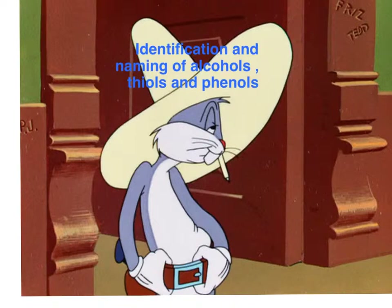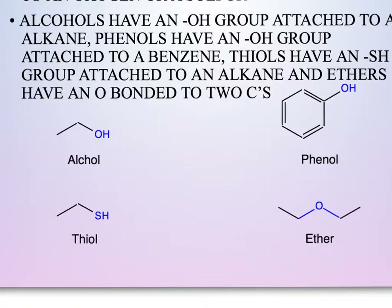They'll vary from functional group to functional group, with alcohols having an OH group attached to an alkane. Phenols will have an OH group attached to a benzene ring, and thiols will have an SH group attached to the alkane. The first thing we're going to do is go through and begin identifying these three functional groups.